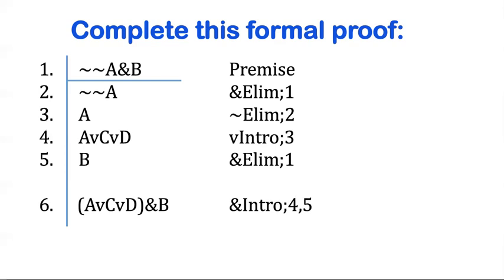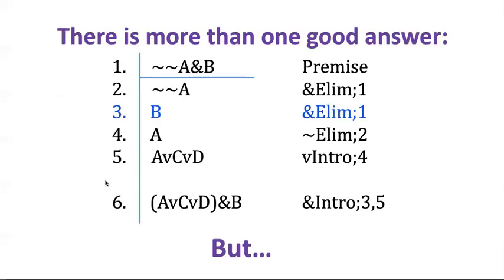The number one thing to know about formal proofs is there's no unique one way to do a formal proof — there are always multiple ways of doing it. Generally, we want to do it in as few steps as possible; that's more elegant. But as long as every one of these rules checks out and you eventually get to the conclusion and justify it properly, then it counts as a good formal proof. There's also going to be many orders in which you could do some of the rules. Here's another perfectly good way of doing it: I could have brought down the not-not-A first and then brought down the B next. Whatever order you choose, you have to make sure to cite your lines correctly as you do so.